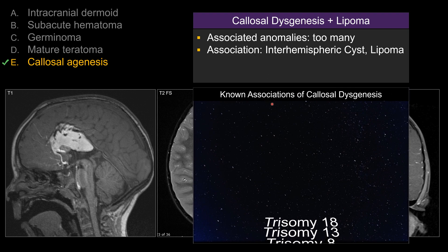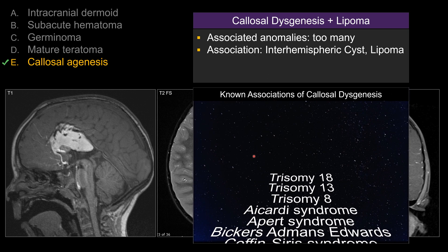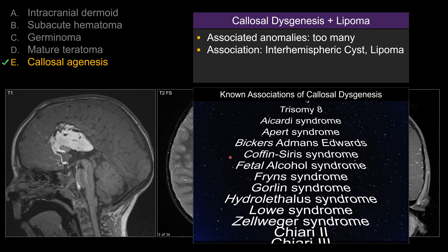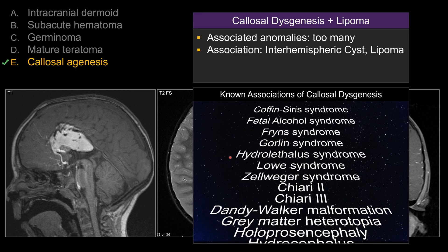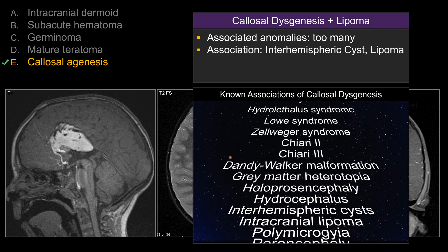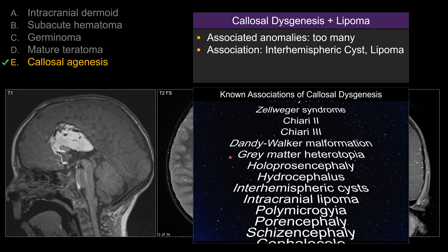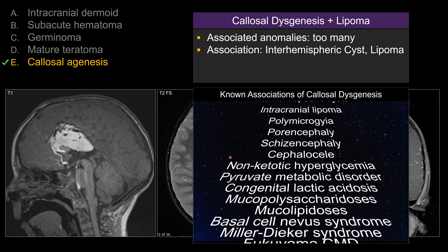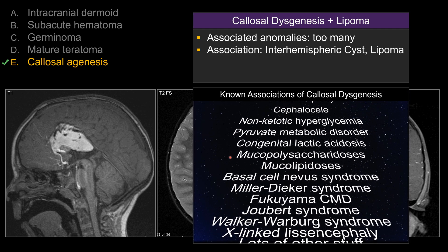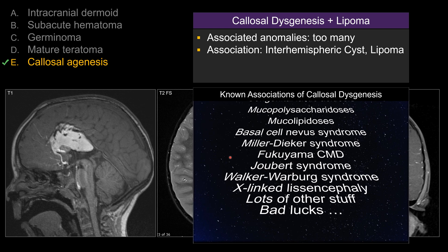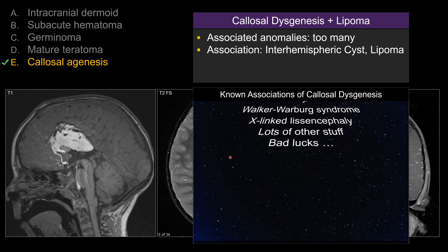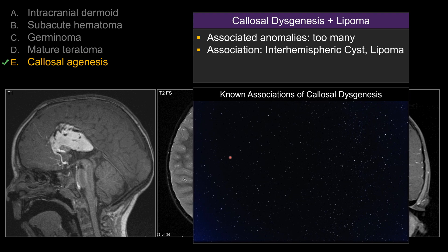As far as associations with corpus callosum dysgenesis, there are probably too many disease entities or malformations to list. On a board exam, if they show you a complex brain malformation and ask you about association with other brain anomalies, corpus callosum dysgenesis is one of the safer guesses, because it is associated with so many different malformations.